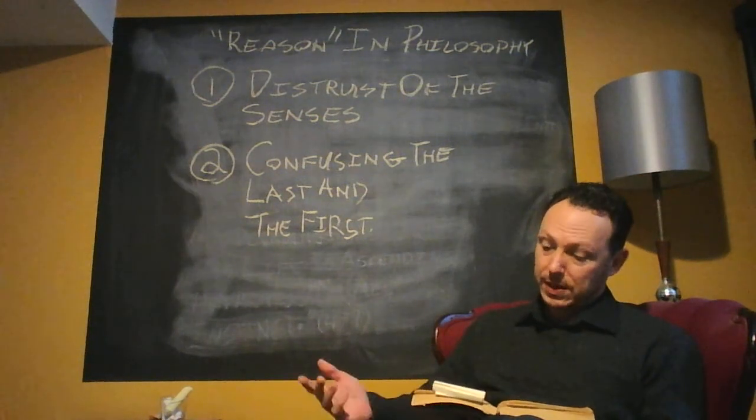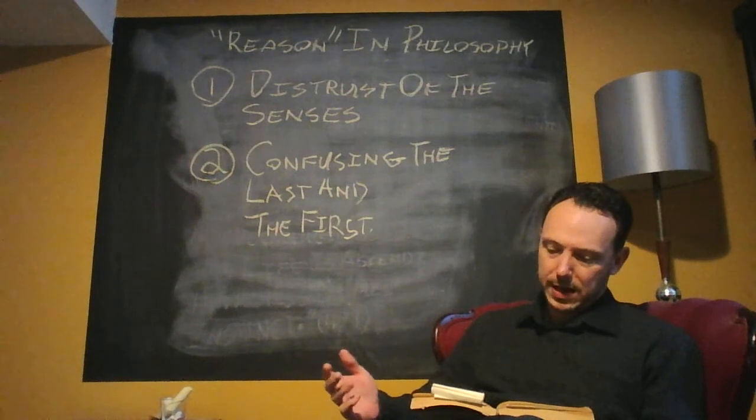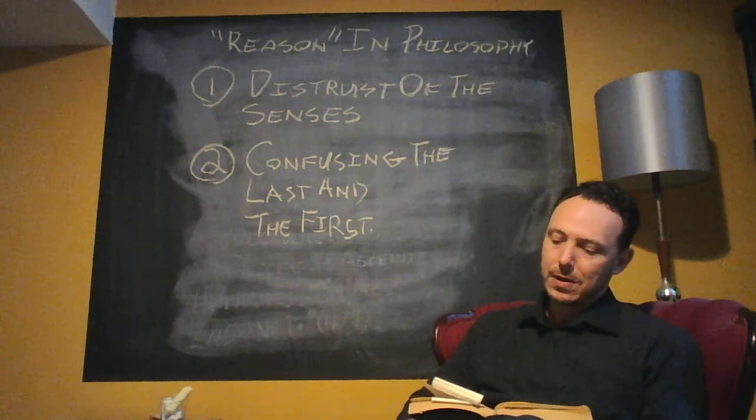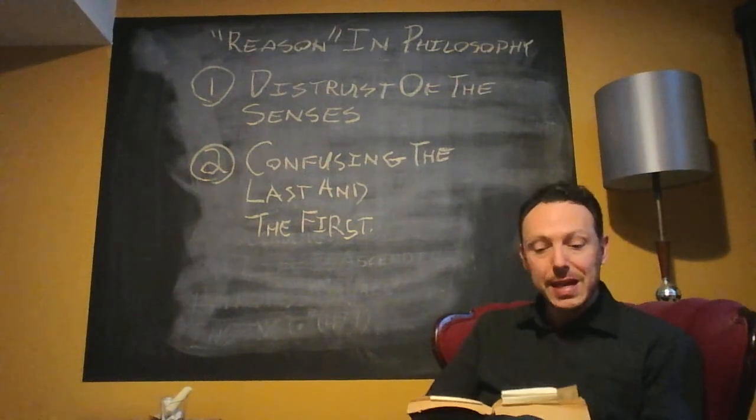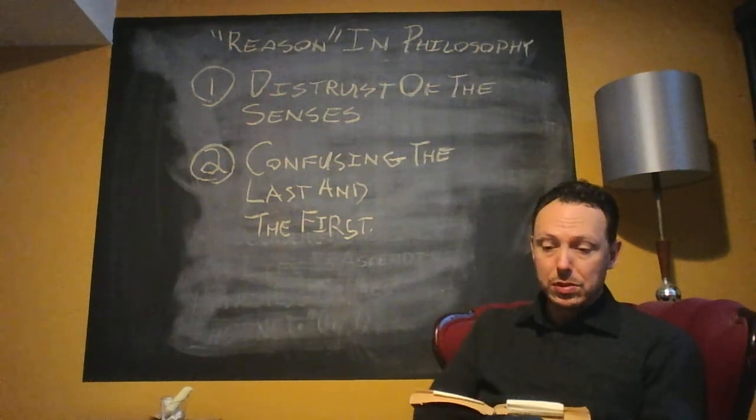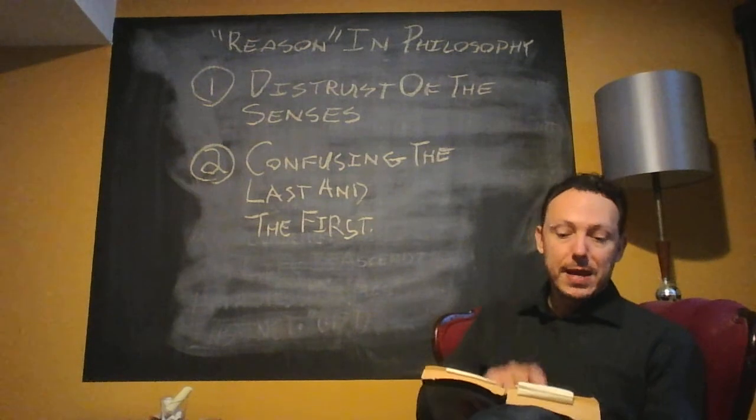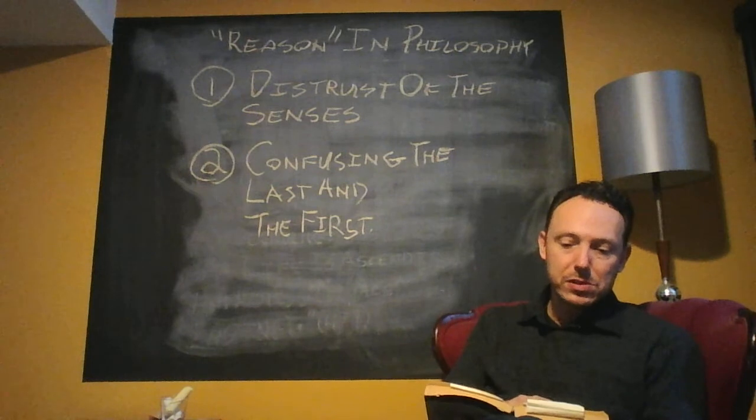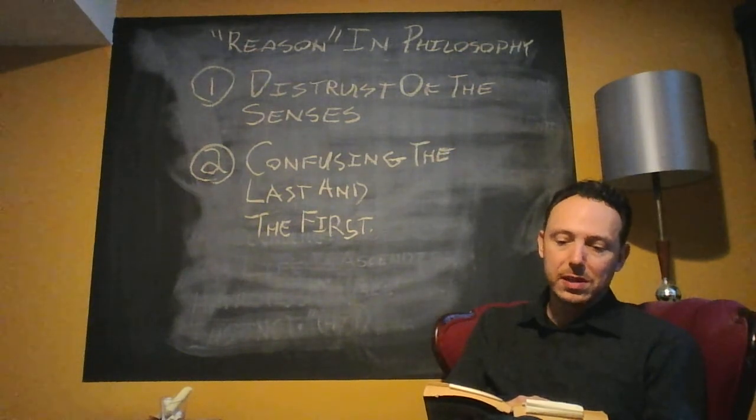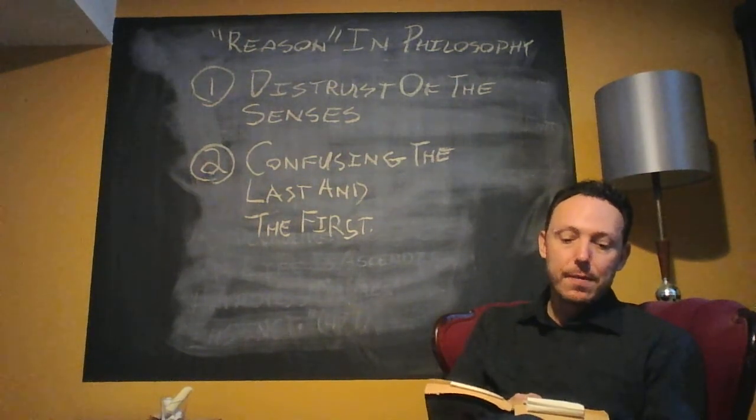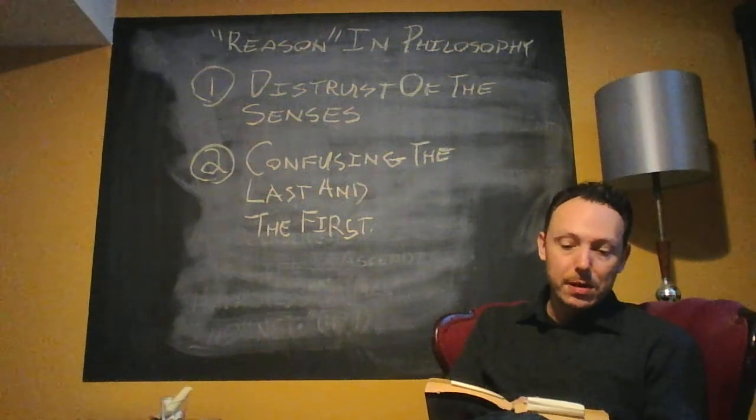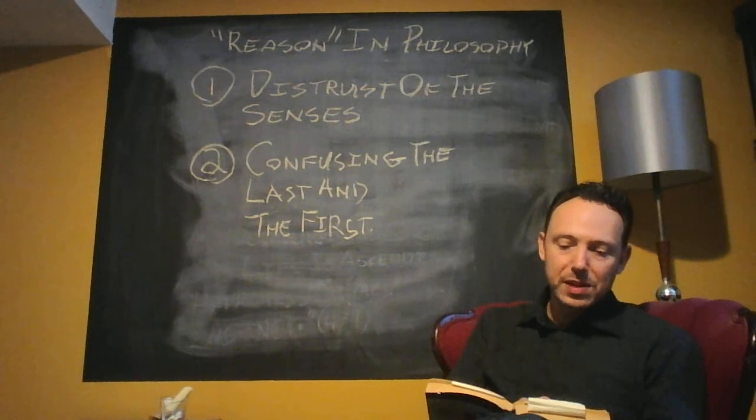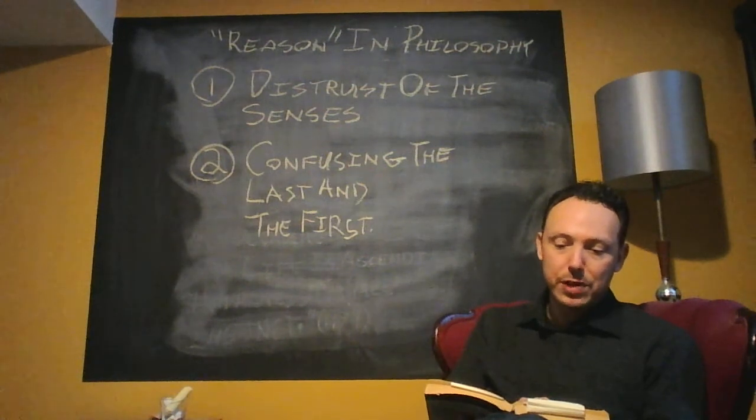And so, Nietzsche claims on page 479, death, change, old age, as well as procreation and growth are to their minds objections, even refutations. Whatever has being does not become. Whatever becomes does not have being. Now, they all believe, desperately even, in what has being. But since they never grasp it, since they seek for reasons why it's kept for them, there must be mere appearance, there must be some deception which prevents us from perceiving that which has being.